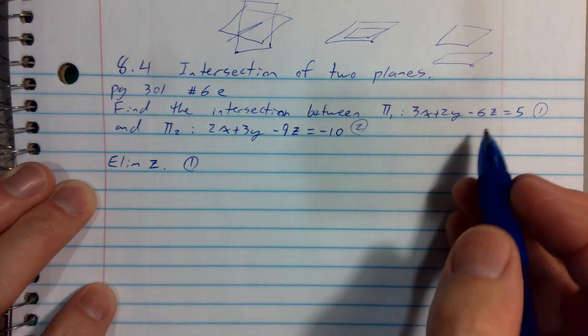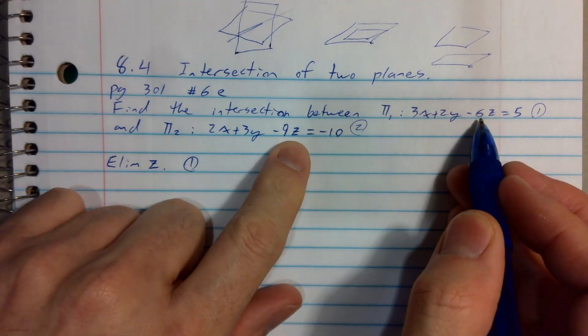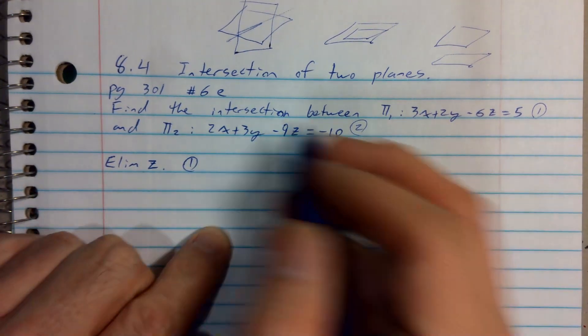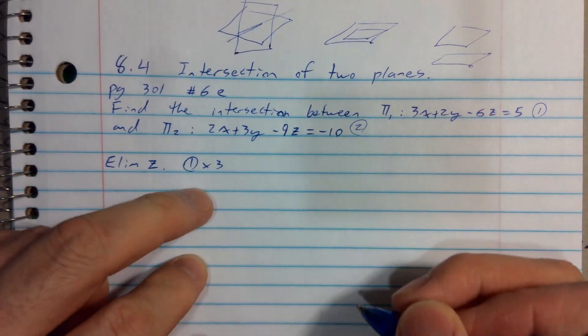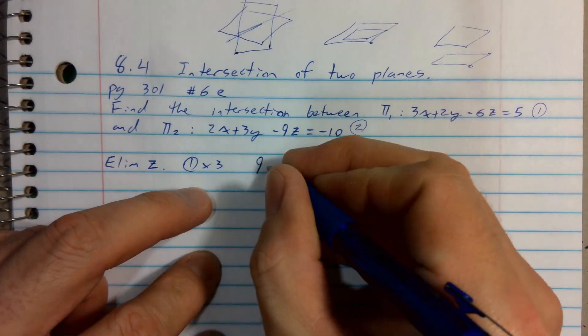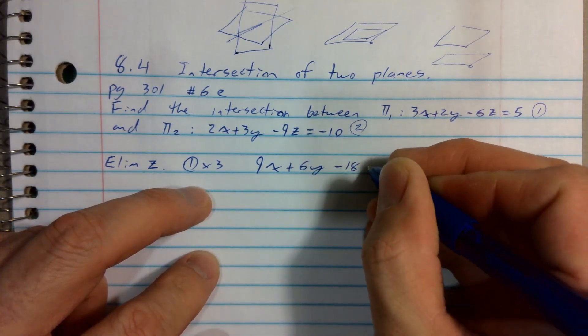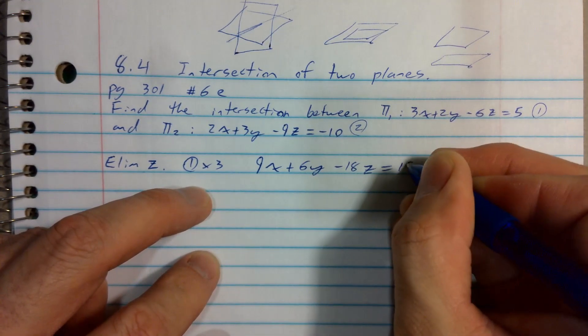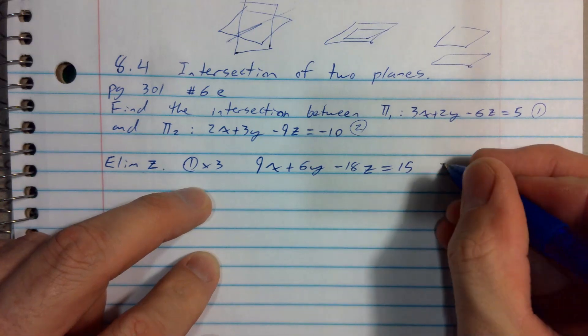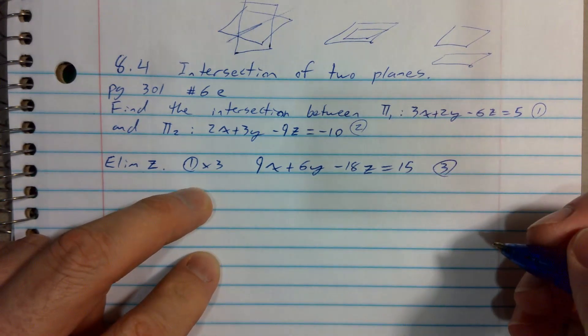Let's tell our reader that we're going to do equation 1 times, what's our least common multiple here? 18. So 1 times 3. That'll give me 9x plus 6y minus 18z equals 15. I'll call that statement 3 or equation 3. That's still plane 1.